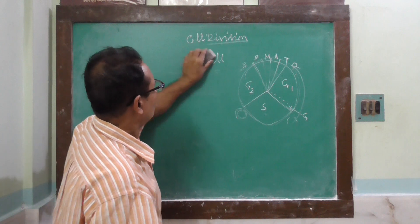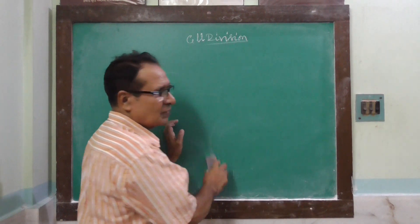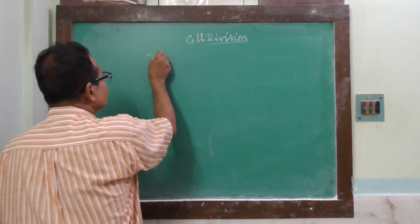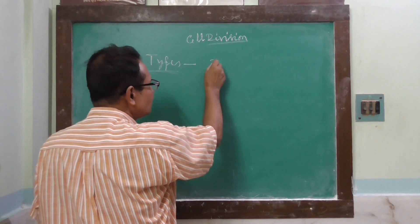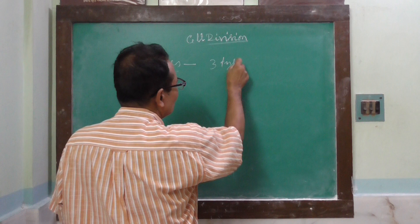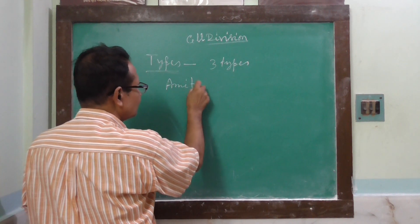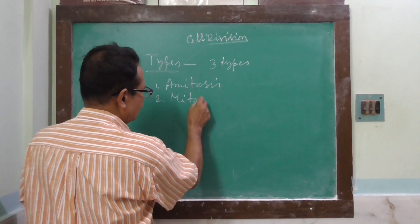Now we enter the topic of cell division. Cell division is the biological process by which a mother cell divides into two daughter cells. Cell division is mainly of three types: amitosis, mitosis, and meiosis.